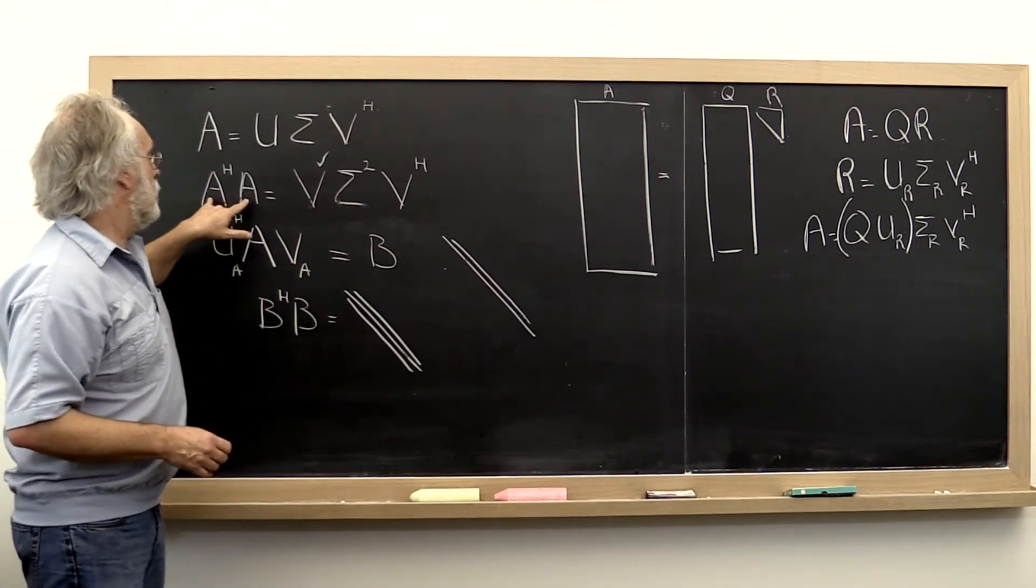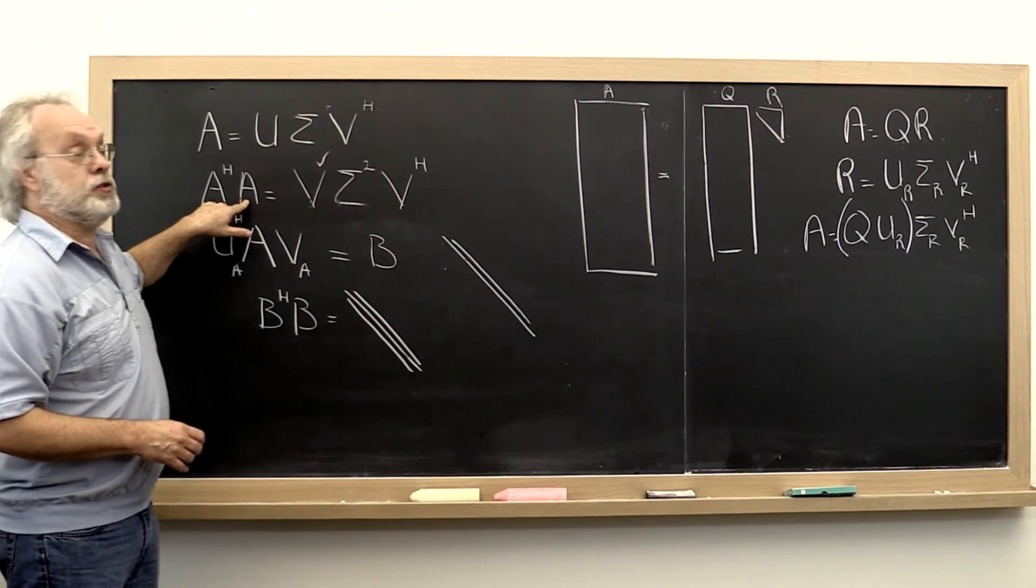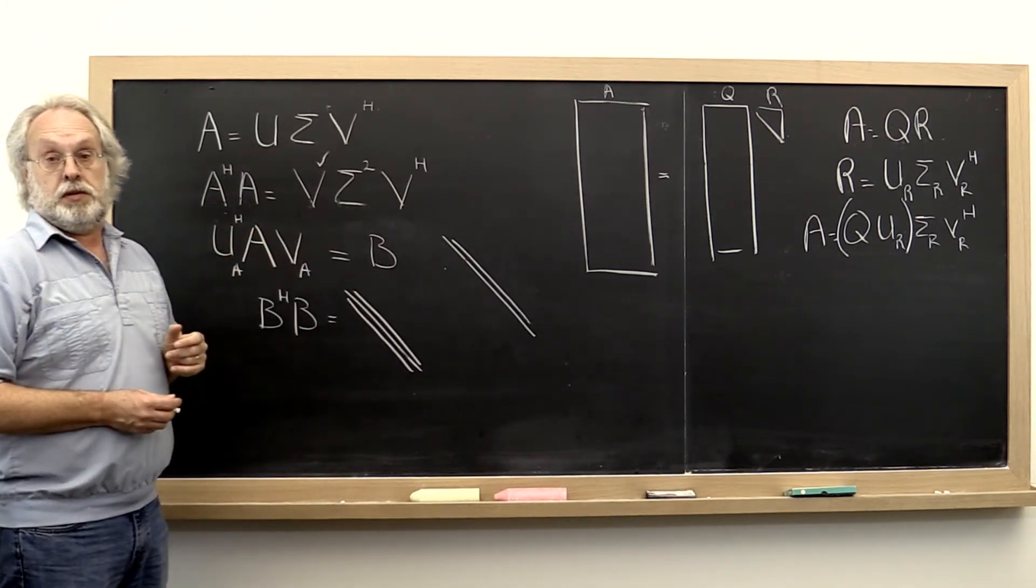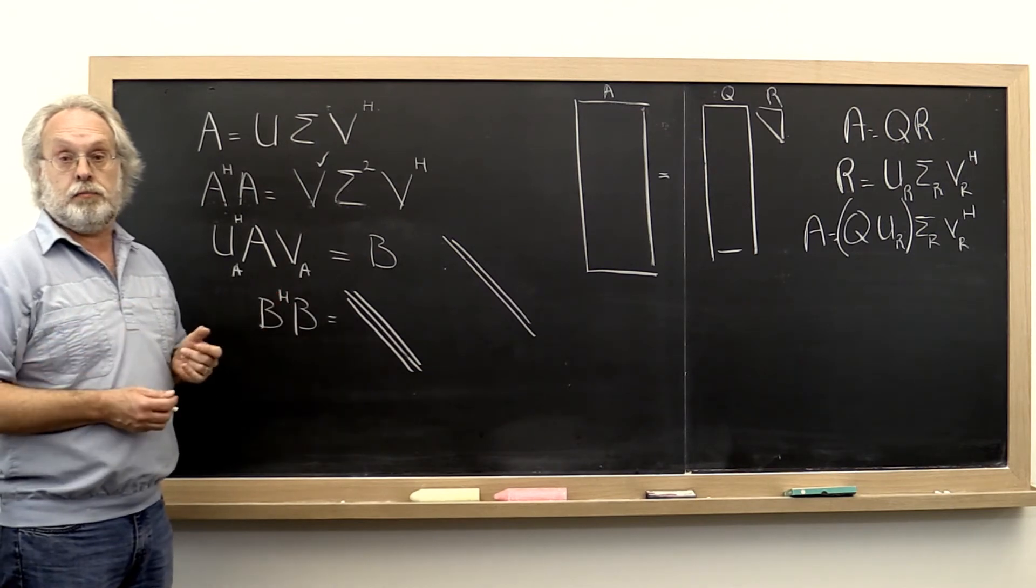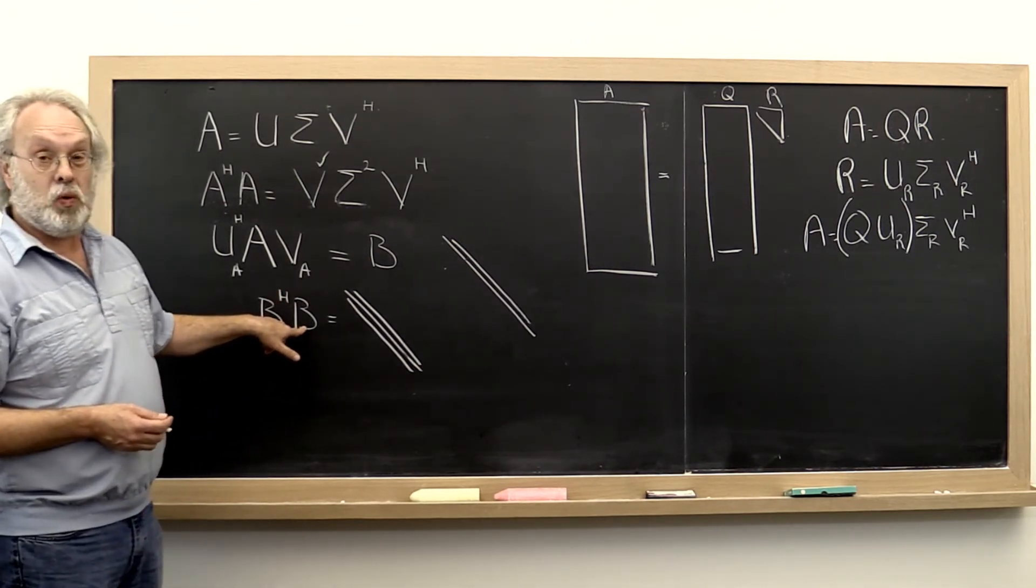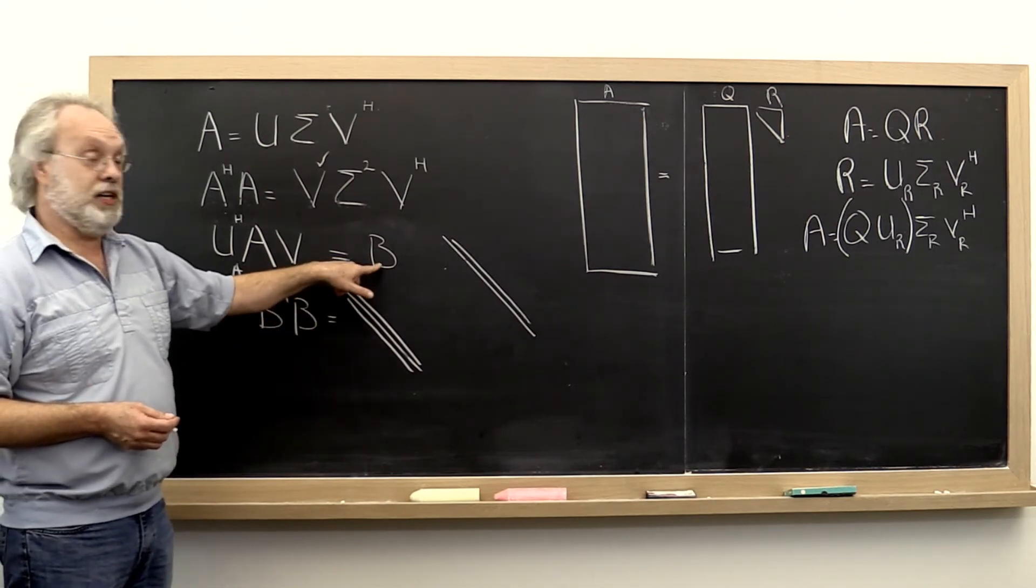We did not want to form A Hermitian transpose times A because that would possibly square the condition number of matrix A. We really don't want to do the same thing with matrix B.